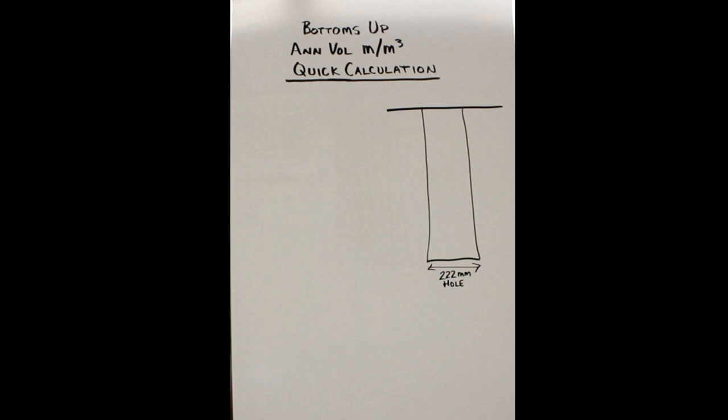For this example, we're going to be using a 222 millimeter hole, and inside this hole we have 127 millimeter drill pipe. Now up in the corner there you can see the formula: ID squared minus OD squared divided by this constant number that I want you guys to memorize. Very important, probably the best formula I've ever learned.